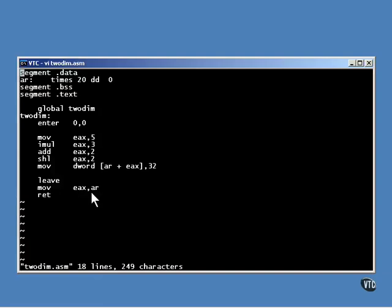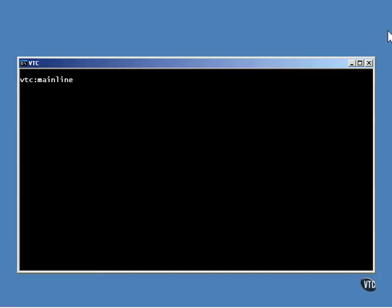The return value, the address of the array, is then stored in the EAX register. A C mainline program calls the function and displays the values as one long array. And you can see where the one item in the array was addressed and modified.